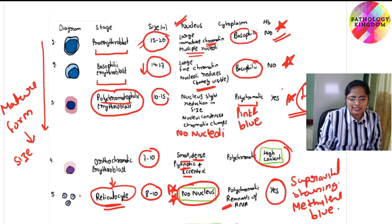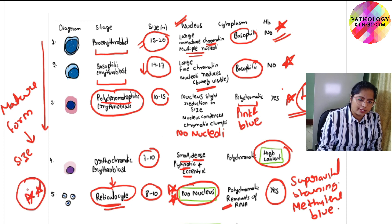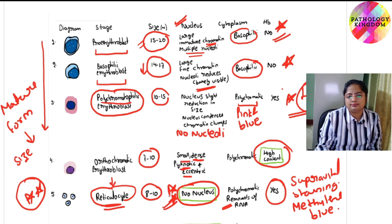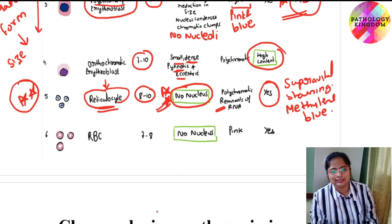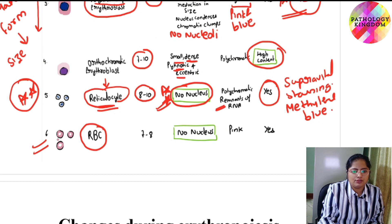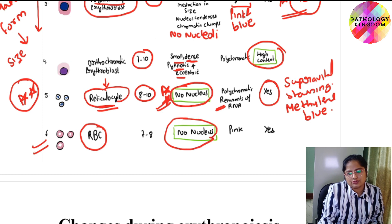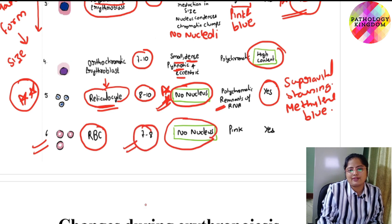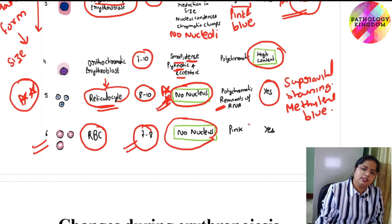With supravital staining you can see blue dot-like structures, which are the remnants of RNA in the reticulocyte. This is the stage in erythropoiesis which has no nucleus. These reticulocytes give rise to the mature RBC, which is biconcave in shape with central one-third pallor, no nucleus, and a size of approximately 7 to 8 microns. The cytoplasm is pink and hemoglobin is present.